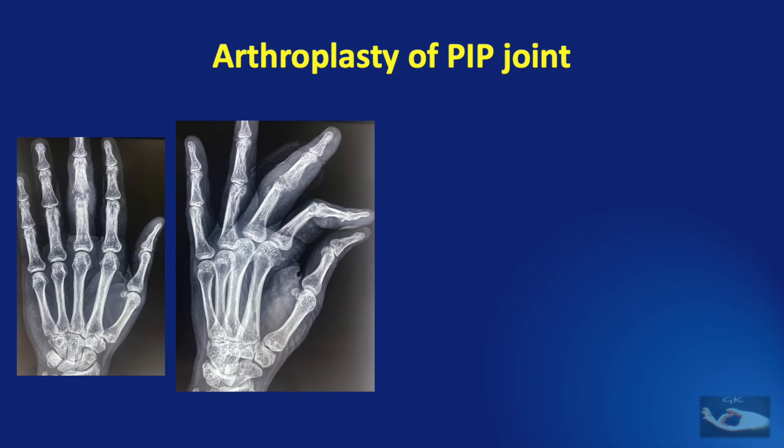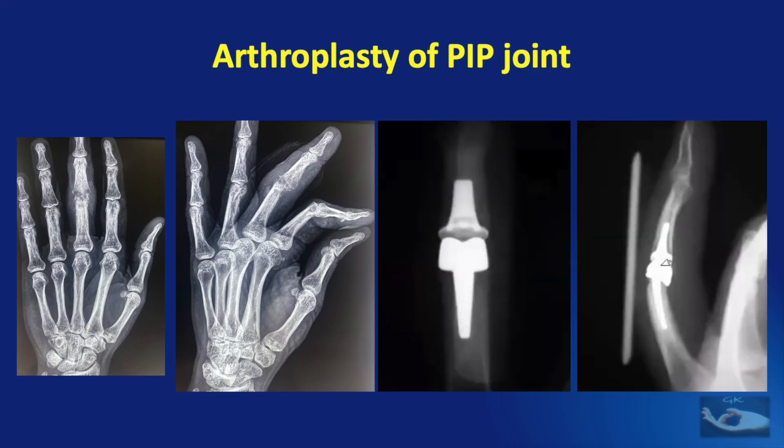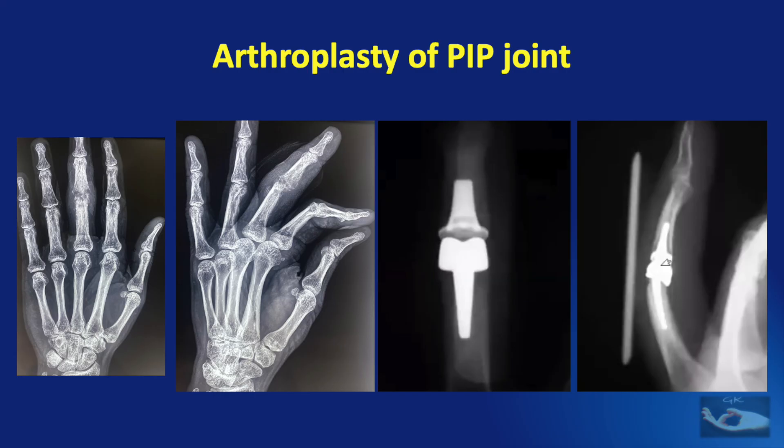This shows a clinical example of destruction of the proximal interphalangeal joint for which a joint replacement has been done. Arthroplasty is ideal for patients in which the primary pathology is in the joint, such as rheumatoid arthritis. Arthrodesis of the PIP joint is a good alternative, especially when all the fingers are involved, as in post-burn problems.